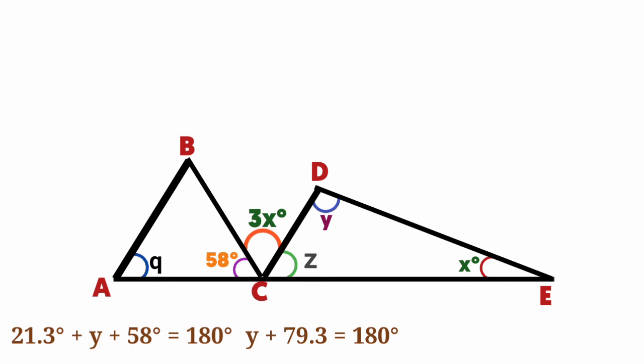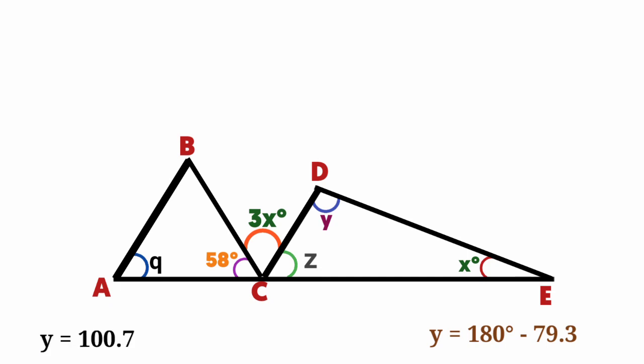Find the value of y. Subtract 79.3 degrees from both sides, so y equals 180 degrees minus 79.3 degrees. Y equals 100.7, so approximately the size of angle Y is equal to 101 degrees.